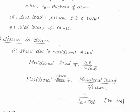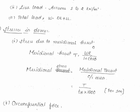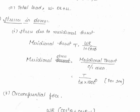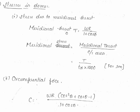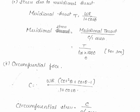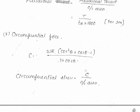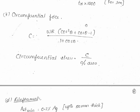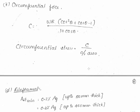Stresses in the dome: meridional thrust is the stress from center to sides. Meridional thrust divided by cross-sectional area gives the meridional stress, which is load divided by area — substituting gives the result (with 1000 used since 1 meter length is assumed). The circumferential force formula is: W·R × (cos²θ + cosθ − 1) / (1 + cosθ). Circumferential stress equals circumferential force C divided by cross-sectional area.